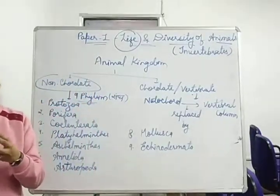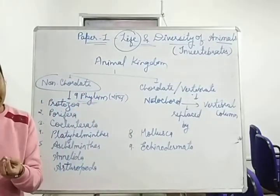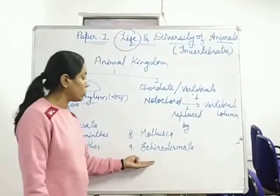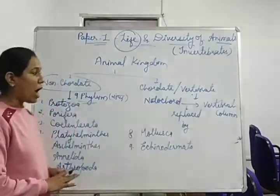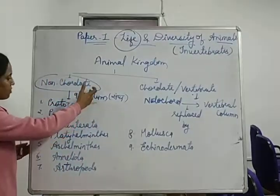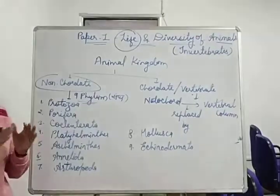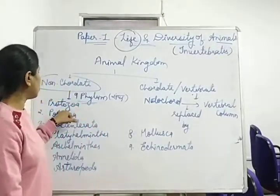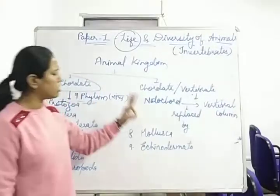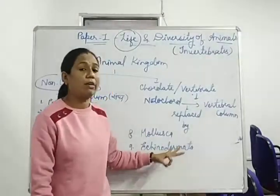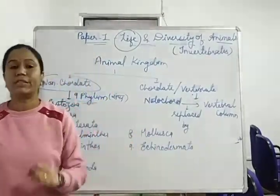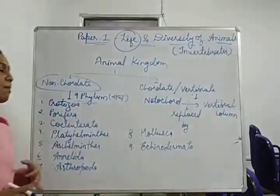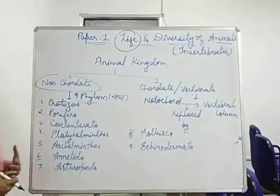Within Echinodermata come starfish, sea urchins, and Antedon. So you will see that as we move on in this sequence, the animals become more complex. Protozoa is the most simple phylum, and the later phyla are more advanced in terms of structure and function.